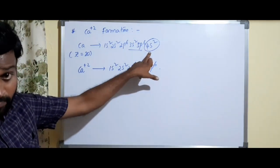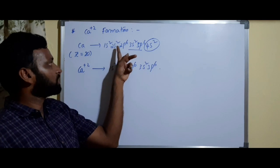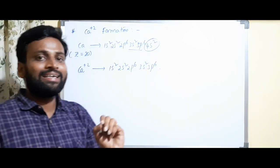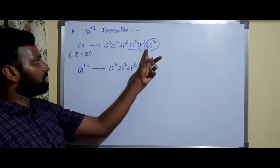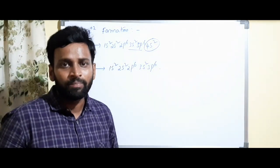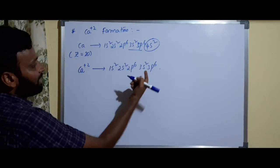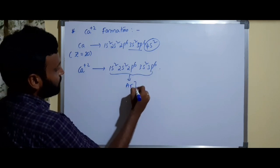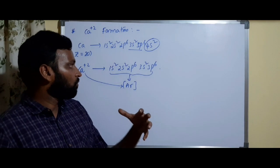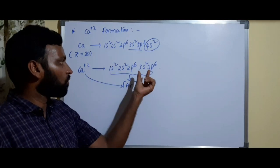Calcium has two extra electrons in the outermost shell (4s²). We remove electrons from the outermost shell — 4 is the highest n value, so from 4s. Instead of adding 6 electrons, removal of 2 is much easier. So Ca²⁺ has the configuration 1s², 2s², 2p⁶, 3s², 3p⁶ — the argon configuration. Ca²⁺ has argon configuration with the octet satisfied at the outermost shell.